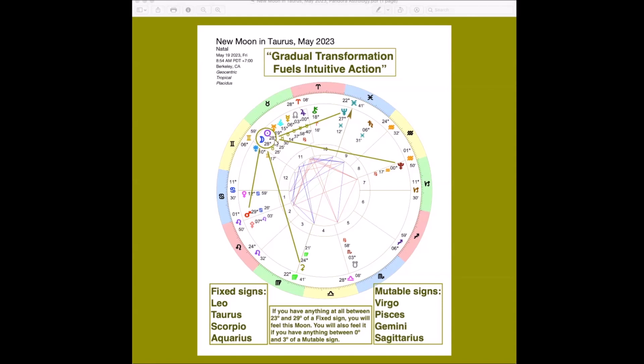This is a new moon, which we know because the sun and the moon are here together, lands in Taurus with a big pile of planets in Taurus, actually. So much grounding and connectedness to the body and the earth happening in this moon.